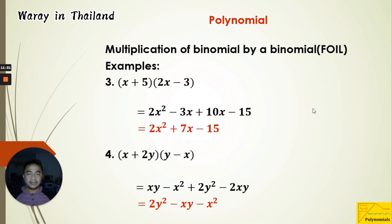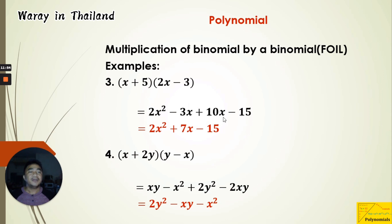Now our last examples — numbers three and four. Number three: (x + 5) times (2x minus 3). First: x times 2x is 2x². Outer: x times negative 3 is negative 3x. Inner: positive 5 times 2x is plus 10x. Last: positive 5 times negative 3 is negative 15. Combining like terms: negative 3x plus 10x gives plus 7x. Therefore, the product is 2x² plus 7x minus 15.